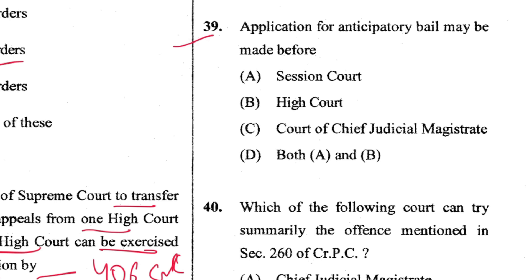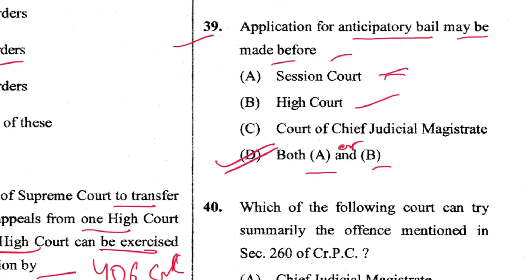Question 39: Application for anticipatory bail may be made before the High Court or the Court of Session — both A and B. D is the answer. The provision for anticipatory bail is in Section 438 of CrPC.